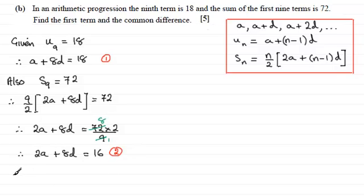If I do equation 2 minus equation 1, I can see that 2A minus A just gives us A. 8D minus 8D cancels to 0. And you've got equals 16 minus 18, which is minus 2. So we've got the first term A, which is minus 2.